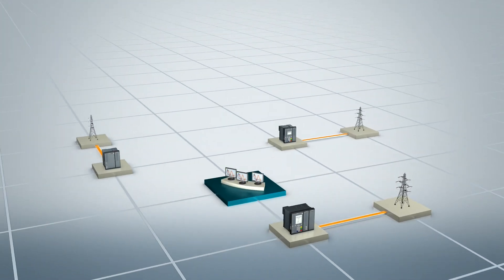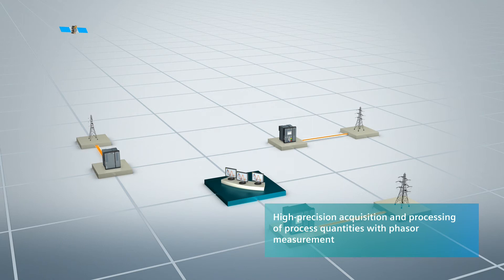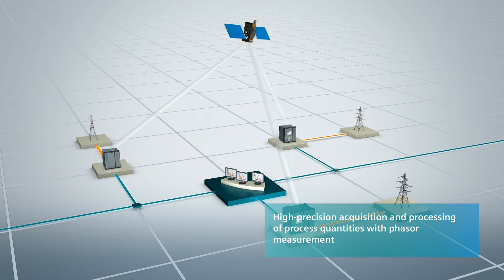Further intelligent functions, such as the phasor measurement, make the high-precision acquisition and processing of process quantities possible. Over Ethernet and in conjunction with IEC 61850, you transmit the obtained data effortlessly to other devices in the grid.